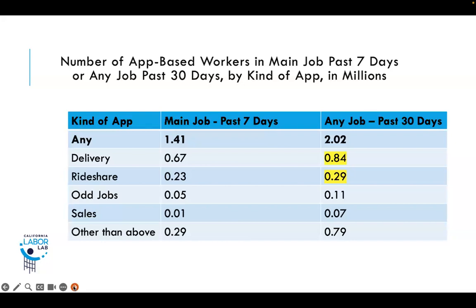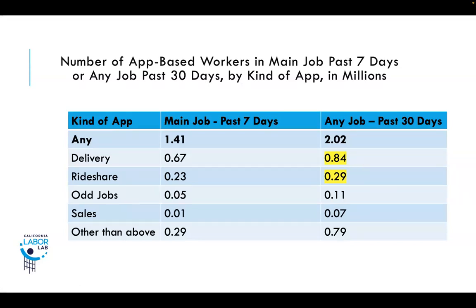Reporting app-based workers by kind of app in millions: 1.4 million people in their main job in the past seven days reported getting their work through an app, and 2 million reported that for any job held in the past 30 days. In California, in the 30 days prior to interview, we estimate there were approximately 840,000 people doing app-based delivery services, and approximately 300,000 who were rideshare drivers during that timeframe.